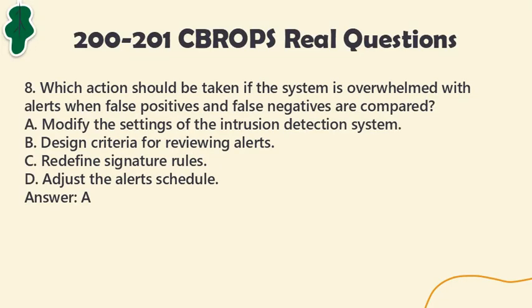Question 8: Which action should be taken if the system is overwhelmed with alerts when false positives and false negatives are compared? A. Modify the settings of the intrusion detection system. B. Design criteria for reviewing alerts. C. Redefine signature rules. D. Adjust the alert's schedule. Answer: A.